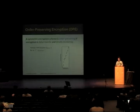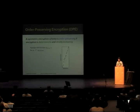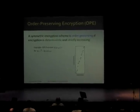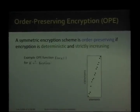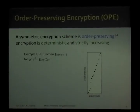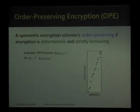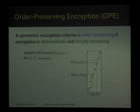I'll start by recalling the definition of Order-Preserving Encryption. We say that a symmetric encryption scheme is Order-Preserving if encryption is deterministic and strictly increasing. In the picture, you can see an example of an Order-Preserving Encryption function on some key, where if M0 is less than M1, then the encryption of M0 is less than the encryption of M1 for that key — hence Order-Preserving.